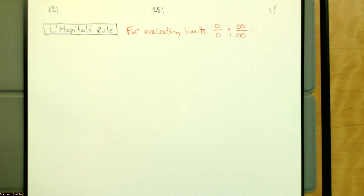Today we want to talk about L'Hopital's rule. This is a rule that we can apply to limits where plugging things in or letting things go to infinity results in a limit that's zero over zero or infinity over infinity. These are two of our indeterminate forms.